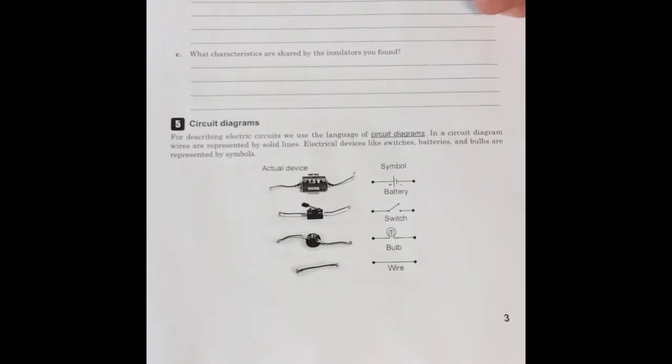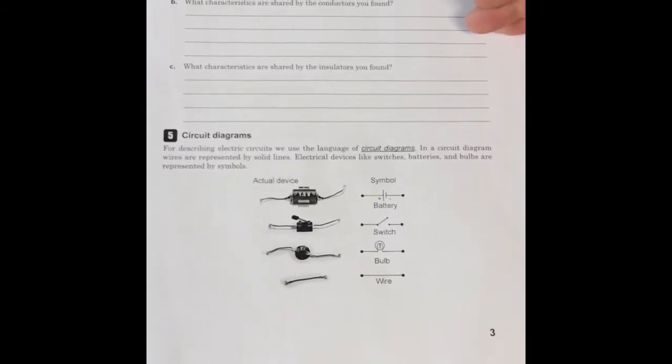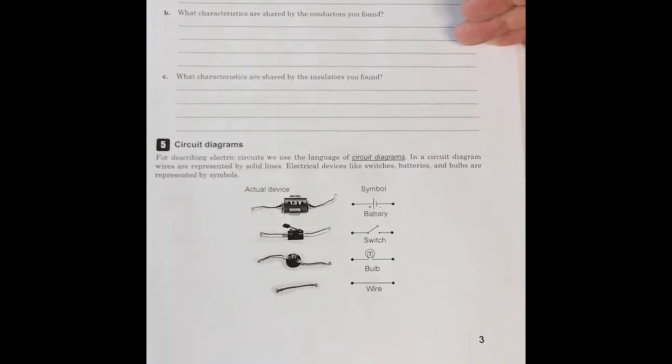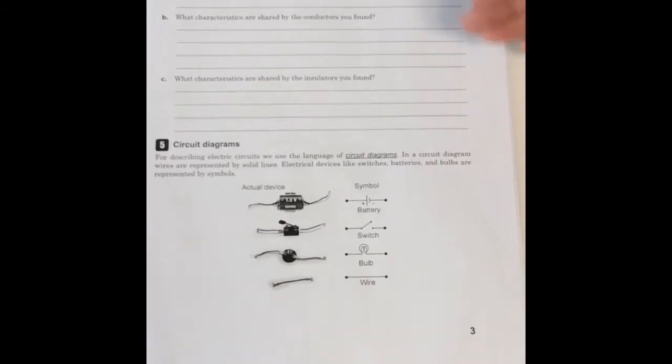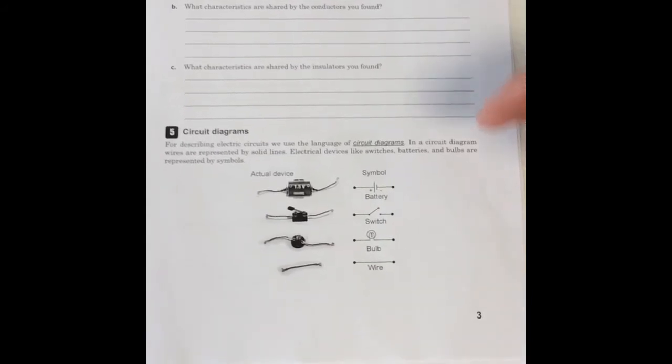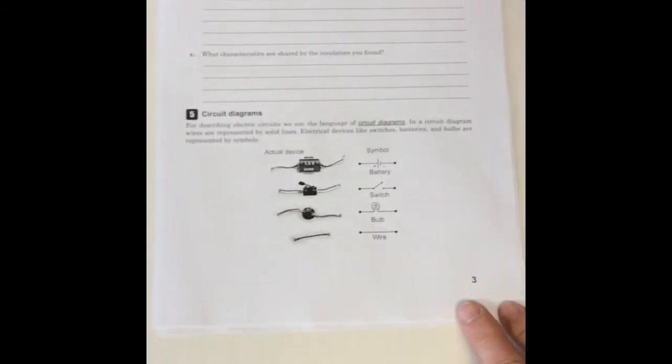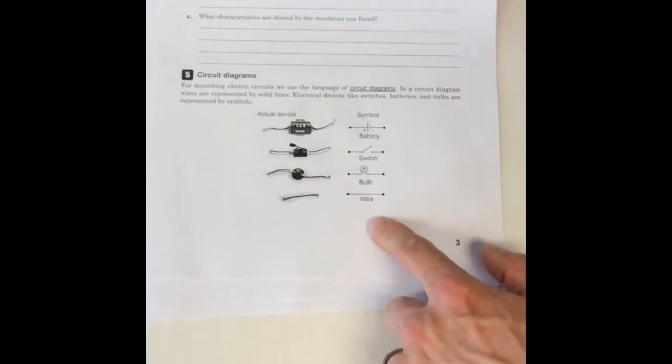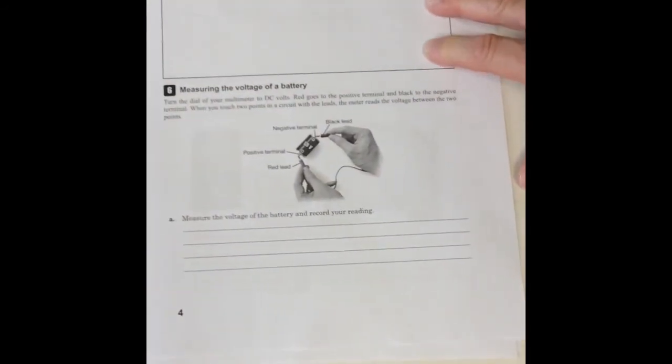So we're making a table listing the materials as either conductors or insulators. Talk about the characteristics that are shared by conductors. We only had one, but what did it do to the electricity and the current? What are some characteristics of our insulators? The next part, you're going to be making a circuit diagram using the codes and drawing what we've measured.